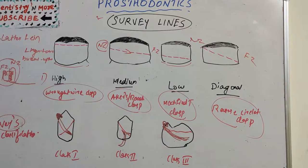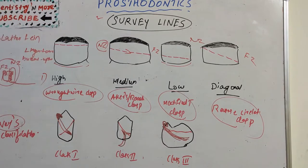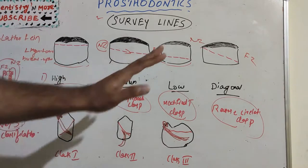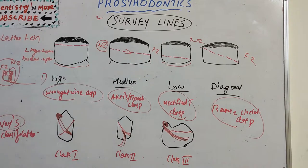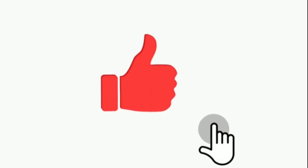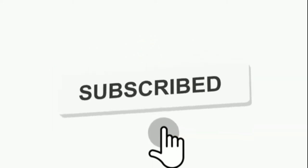In summary, survey lines help determine where a clasp should be kept depending on the angulation and orientation of the tooth. The Blatterfinn classification gives us high, medium, low, and diagonal survey lines, while the Nee classification gives us Class 1, Class 2, and Class 3. I hope you understood this concept. I will come up with a new topic in prosthodontics — thank you.